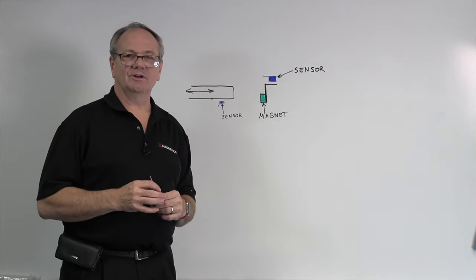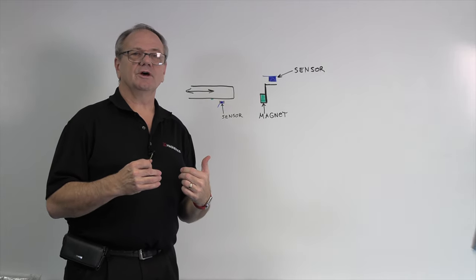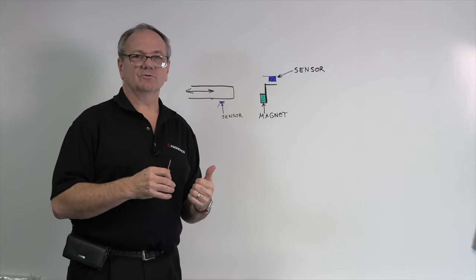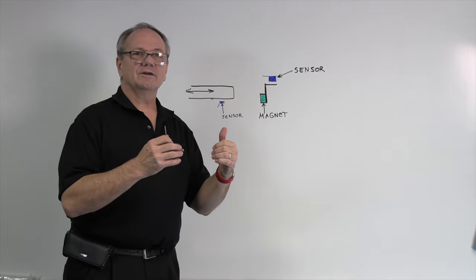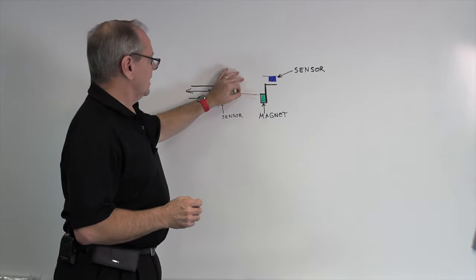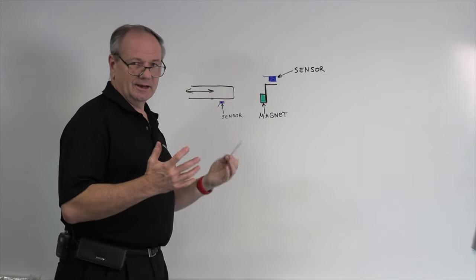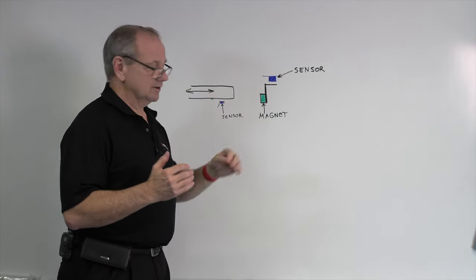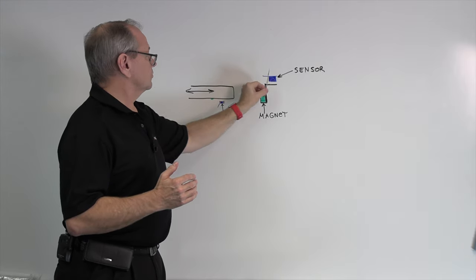A second application that we had, we had a customer who had already gone to manufacturing with this idea. They had already gotten into the step, but it wasn't working. So what was the application? They had a magnet, and somebody had designed it so that the magnet was 90 degrees to where the sensor is.